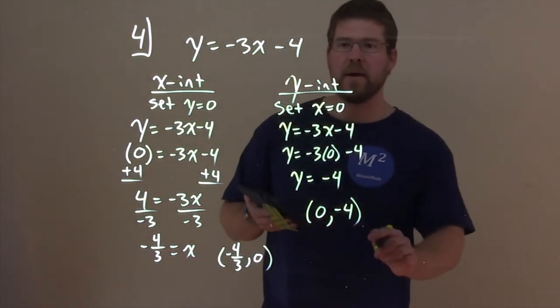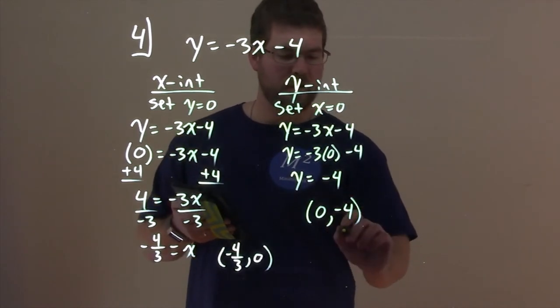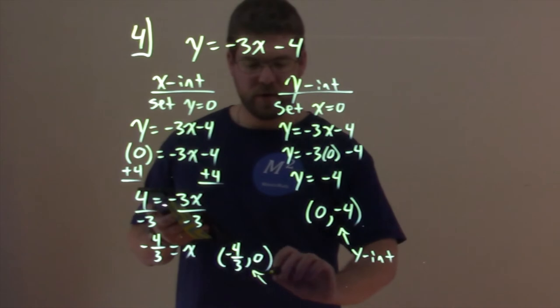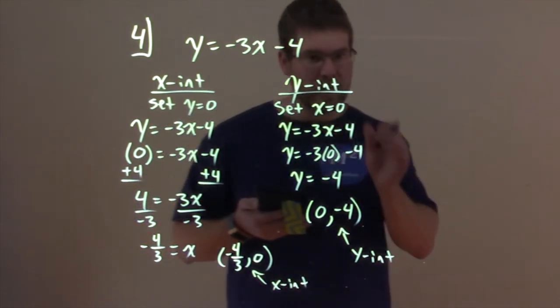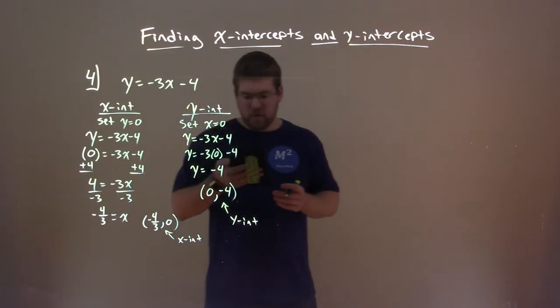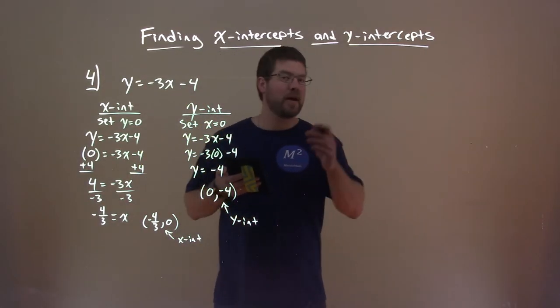So, now we have what we see here is our y-intercept, and this one's our x-intercept. So, we're going to use these two points to graph this line. So, bear with me for a second. I'm going to plot this graph.